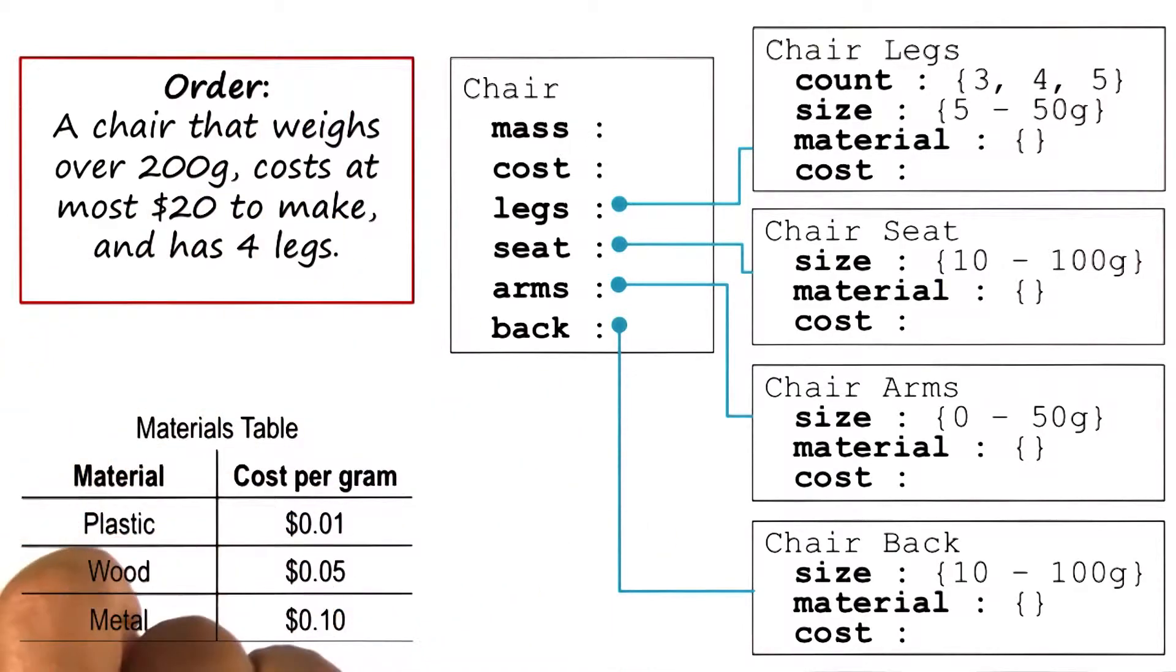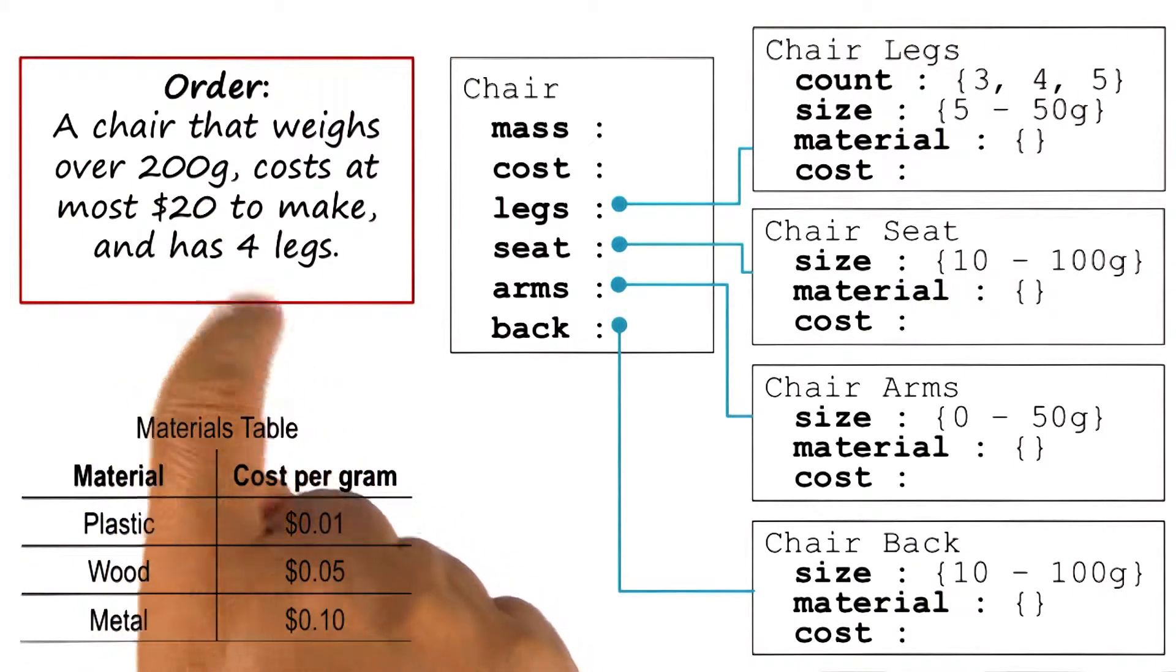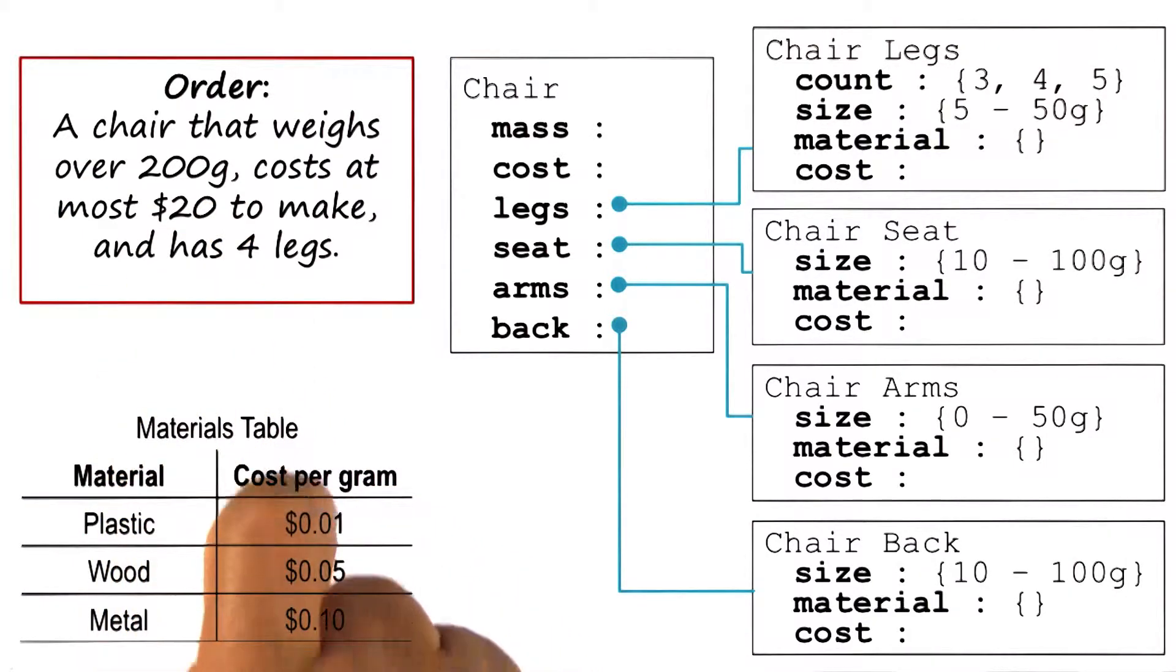Now let us suppose that we get a new order in which a customer wants a chair that weighs over 200 grams, costs at most $20, and has four legs.